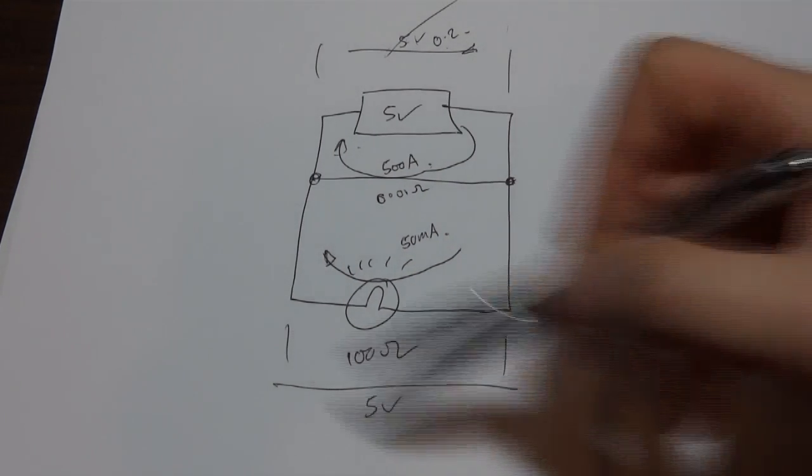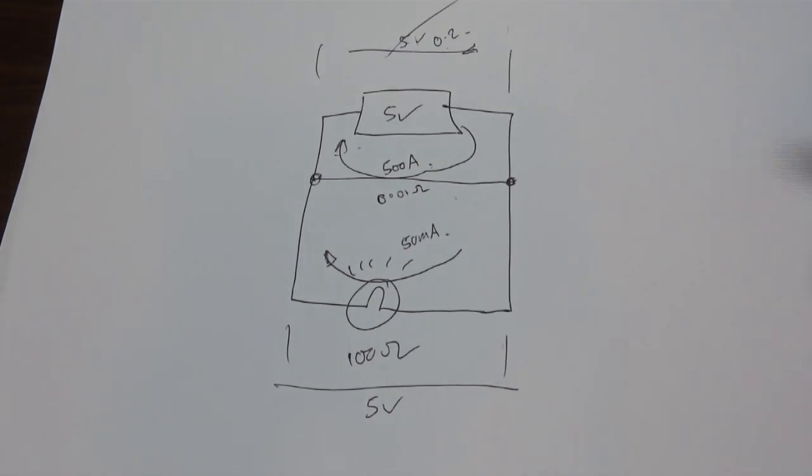So obviously we don't have 5 volts anywhere, we've only got 0.2 volts across the bulb and that's not enough to make it light, so that basically gives us the appearance that the circuit doesn't work.